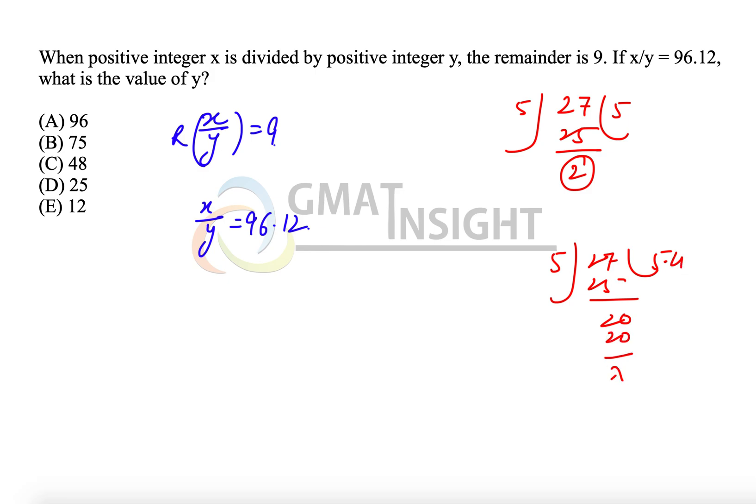Which means what we need to understand is that this decimal part is the representation of the remainder. In a way, what we can say is that the decimal part multiplied by the divisor is equal to the remainder, which is equal to 2. So, let me just write it down here. The concept is the decimal part multiplied by the divisor is equal to the remainder.